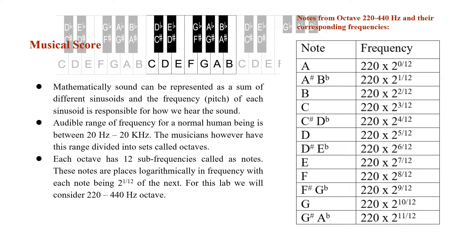Representing sound using mathematics, we can use sinusoidal signals and add them together. As human beings, we have a specific range of frequencies that are audible for us — the frequencies that humans can hear range between 20 hertz and 20 kilohertz. This range has been split into sets called octaves, and each octave can be divided into 12 sub-frequencies called notes. These notes are what we usually see in piano keys, and there are 12 of them. Each note is 2 raised to the power 1 over 12 of the next note.